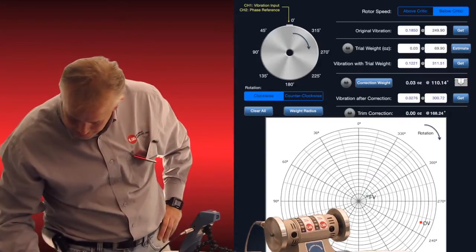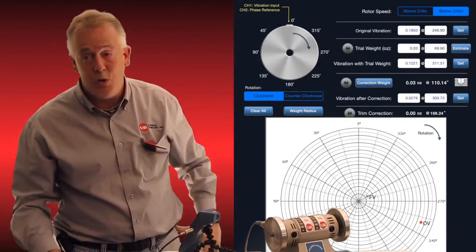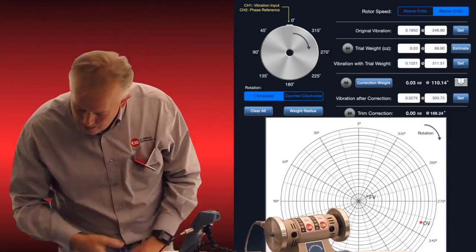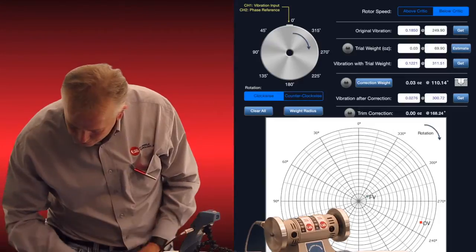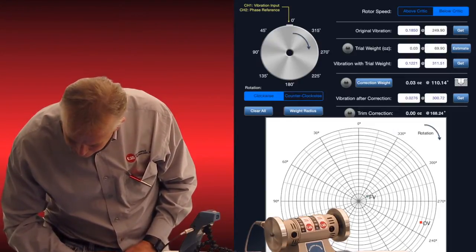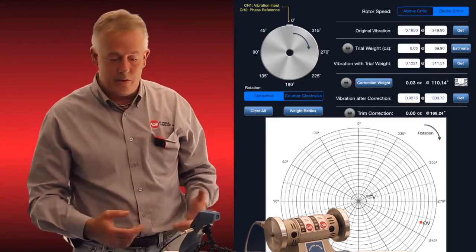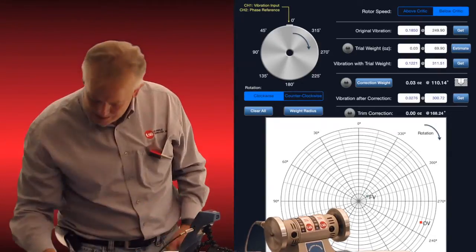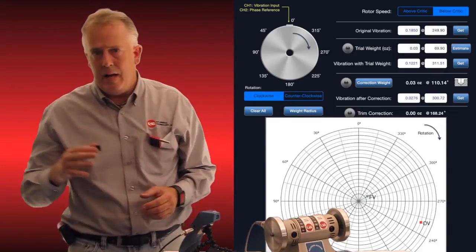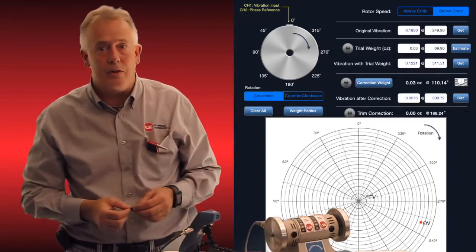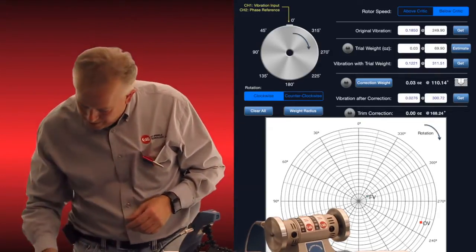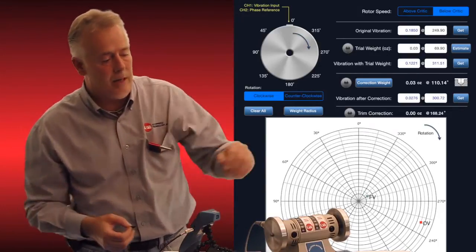And you can see it's telling me I'm at 0.02, which is now at an acceptable ISO level. But it's also telling me that I can make an additional correction by adding a small amount of weight at 168 degrees. So let's do that. We don't have anything that small because it's telling me 0.00 ounces, which if it had another decimal place, it might show me a value, but it's very small because we're already within ISO specs, but it's giving me a continuous heavy spot. So let's make that correction.